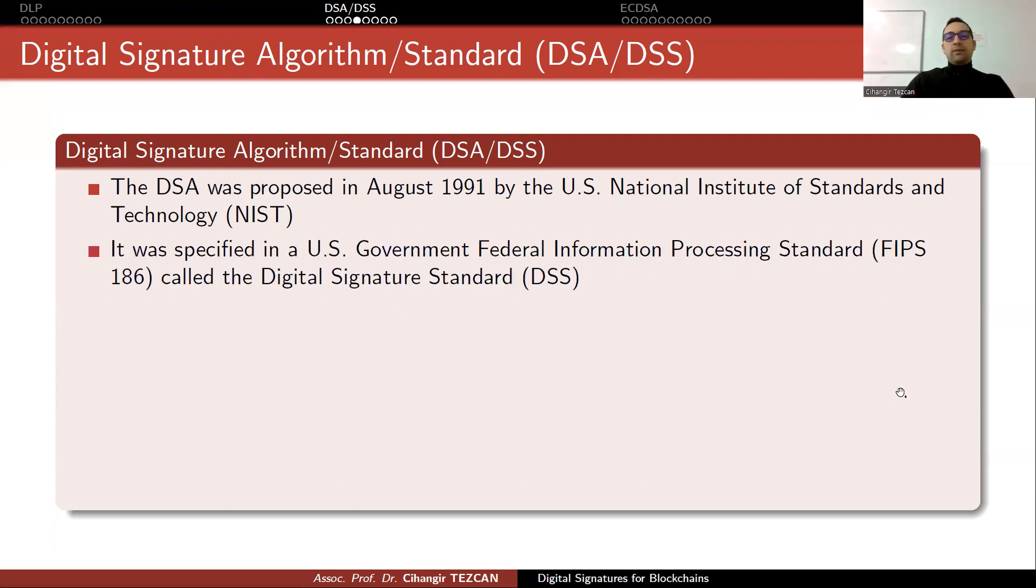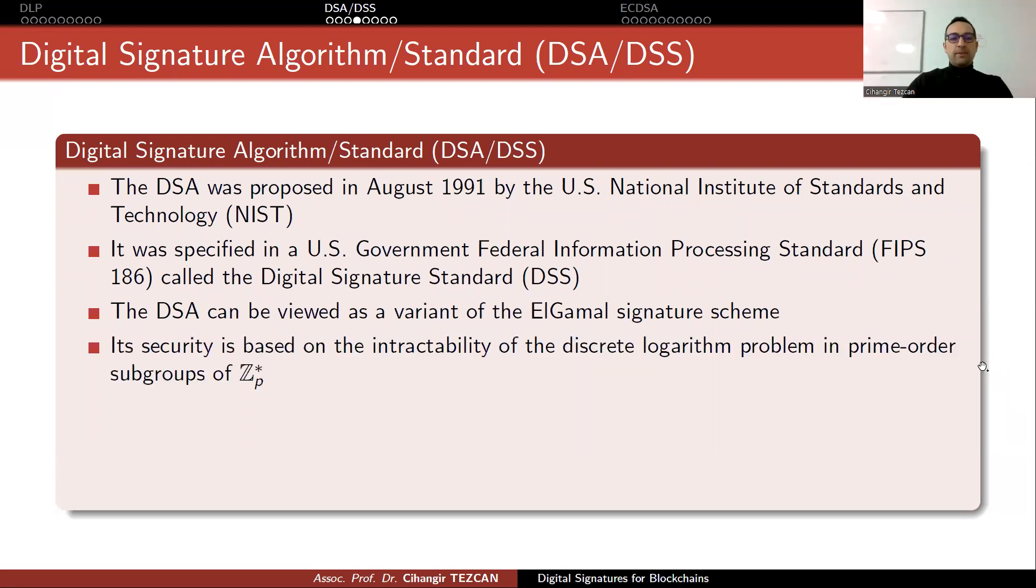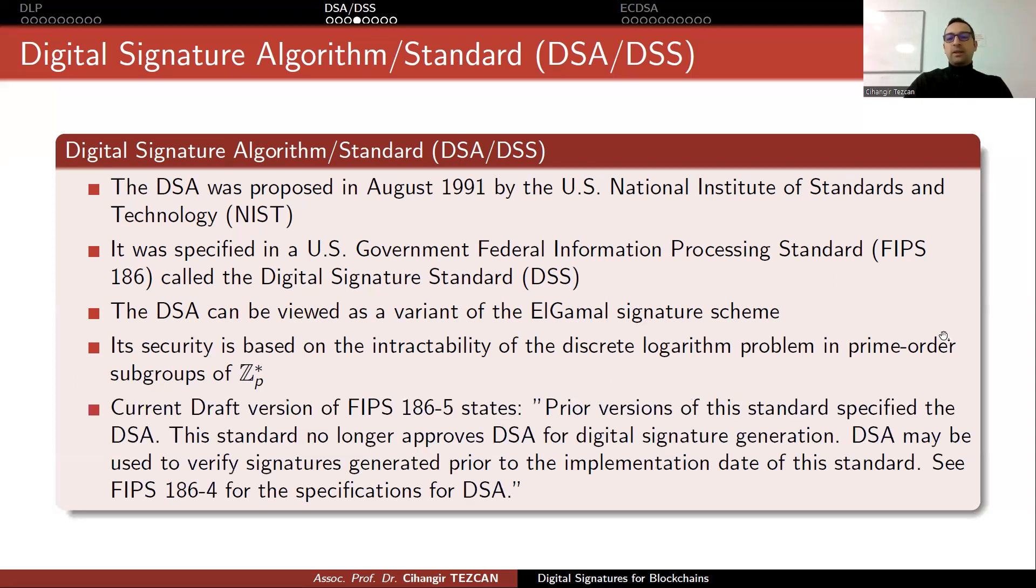This was proposed in August 1991 by the United States National Institute of Standards and Technology, NIST. It was specified in a US government federal information processing standard, FIPS, called the Digital Signature Standard. The DSA can be viewed as a variant of the ElGamal signature scheme. This is why I showed you how ElGamal works in the previous slides. Its security is based on the intractability of the discrete logarithm problem in prime-order subgroups of ZP star. Here you are using this field, but you are also working on the subgroup. By subgroup, we mean that the generator generates a subgroup of this field.